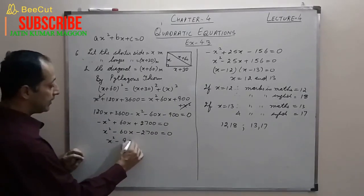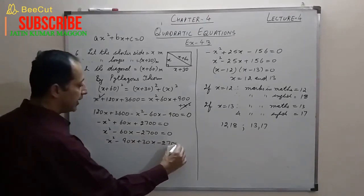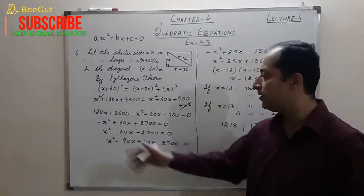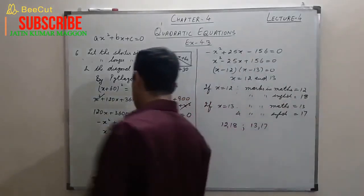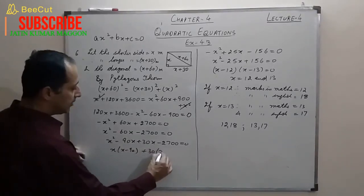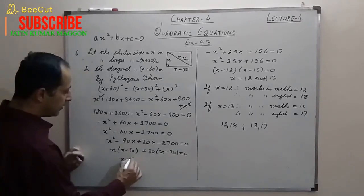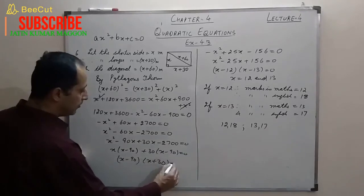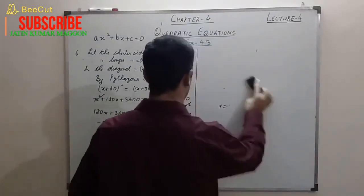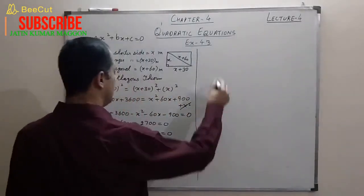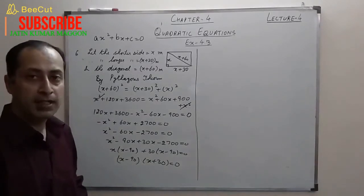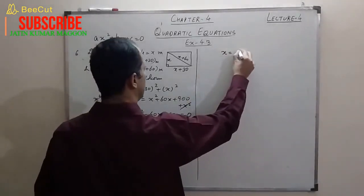Splitting the middle term: we need two numbers whose product is −2700 and sum is −60, which are −90 and +30. So: x(x−90) + 30(x−90) = 0, giving (x−90)(x+30) = 0. Therefore x = 90 or x = −30.